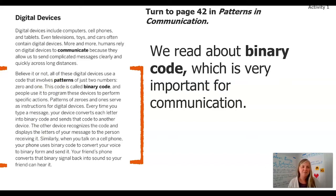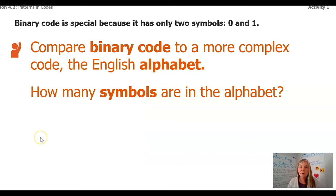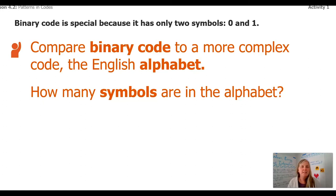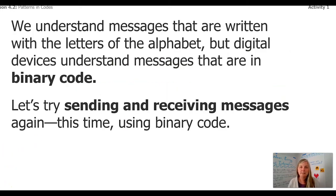How does it work, though? Binary code is special because it has only two symbols: zero and one. Now compare that to our English alphabet — which one is more complex? How many symbols does our alphabet have? Yes, 26 different symbols, versus binary which just has zero and one. We understand messages written with letters of the alphabet, but digital devices understand messages that are binary code.